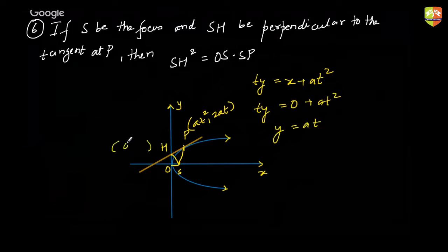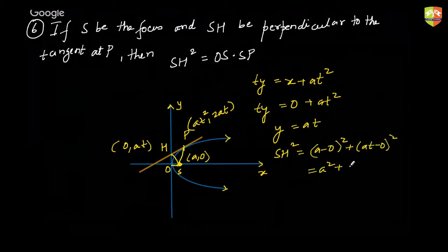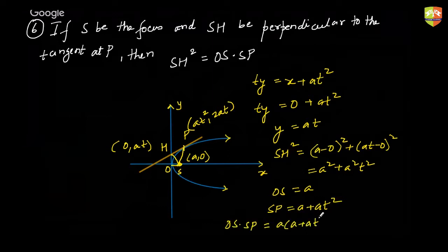Putting x = 0 gives ty = at², so y = at, meaning H is (0, at). S is at (a, 0). So SH² = a² + a²t². OS is a, SP is a + at², so OS × SP = a(a + at²) = a² + a²t², which matches SH². Done.